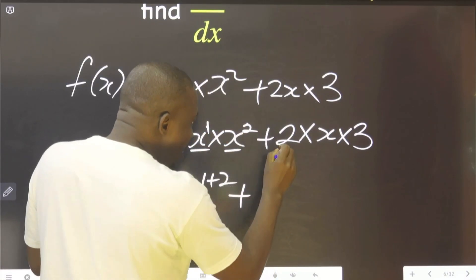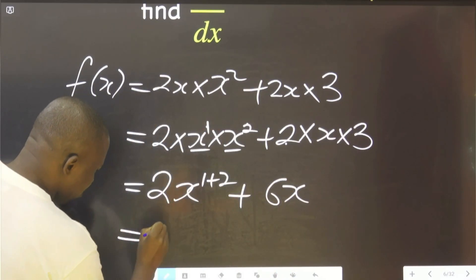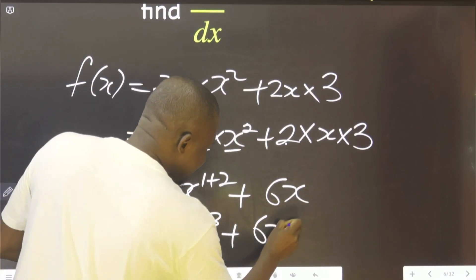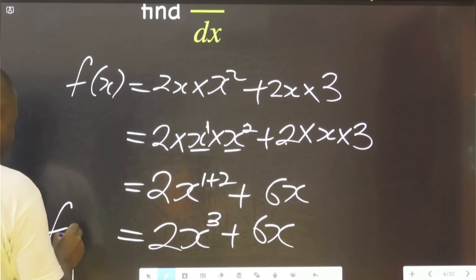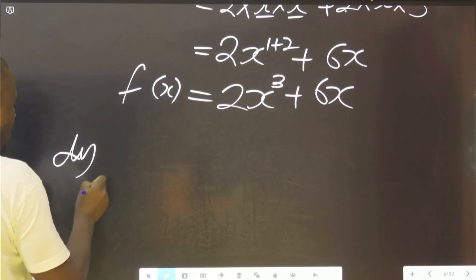Now 2 multiplied by 3 is 6, so that is 6x. This equals to 2x³ plus 6x. Now we can differentiate. As I said earlier, you can say dy/dx, which is still the derivative of the function.